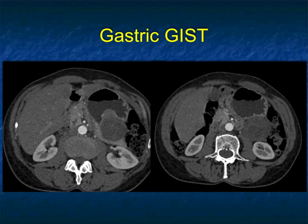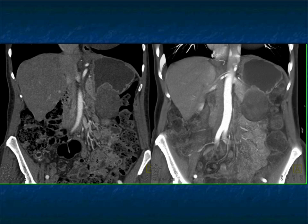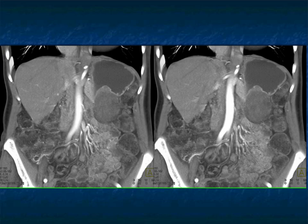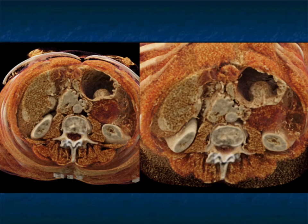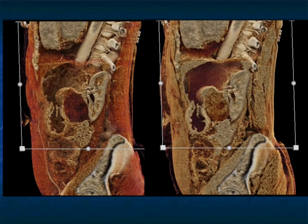Another example just to show you — GIST can sometimes be cystic. Here it's pushing into the lumen but is mainly exophytic. Don't confuse it with a pancreatic mass, adrenal mass, or retroperitoneal mass. Sometimes it's tricky — is it a big mass pushing against the stomach or coming from the stomach? In this case the dumbbell appearance makes it very easy. Cystic GIST tumors are not uncommon. Solid GIST tumors can become more cystic if patients are treated with Gleevec. You can see here it's pushing on the left kidney, pushing into the stomach, but mainly considered exophytic.